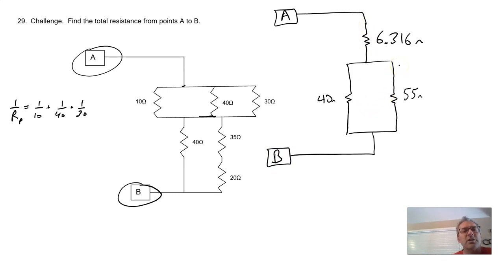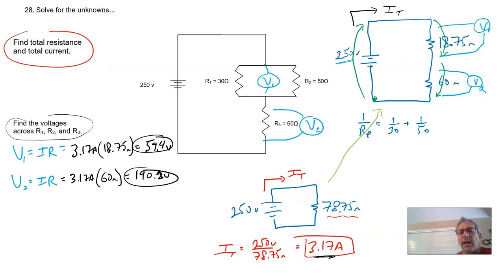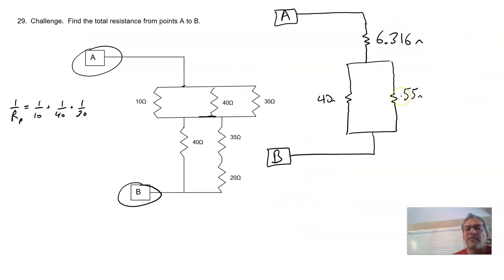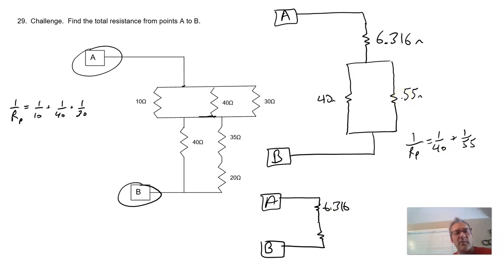So here's a series parallel. This looks very much like one of the previous problems. Kind of like number 28 right here. Series parallel combination. The 40 and the 55, how do we add those? 1 over resistors in parallel is equal to 1 over 40 plus 1 over 55. Let's draw that. There's our A. There's that. And the 40 and 55, we're going to combine those as 1. And here's our B. We know that was 6.316. And the 40 and the 55. 40 inverse plus 55 inverse equals inverse. And we get 23.16 ohms.